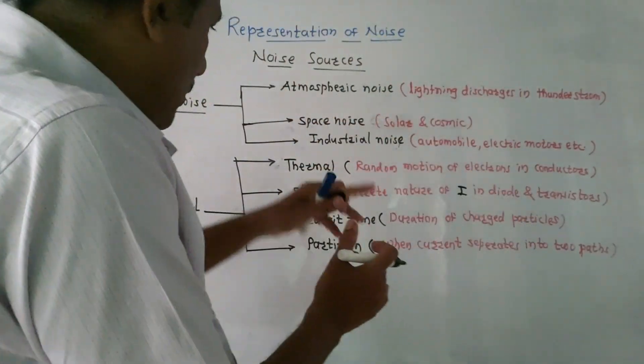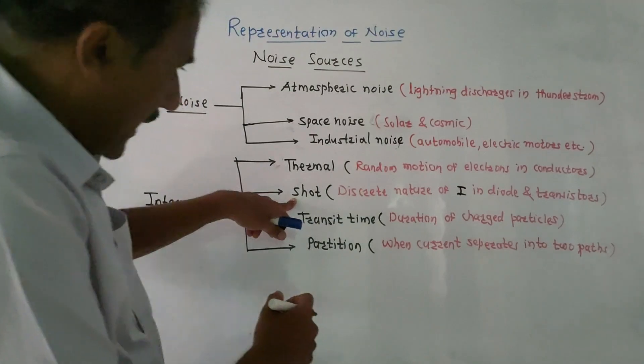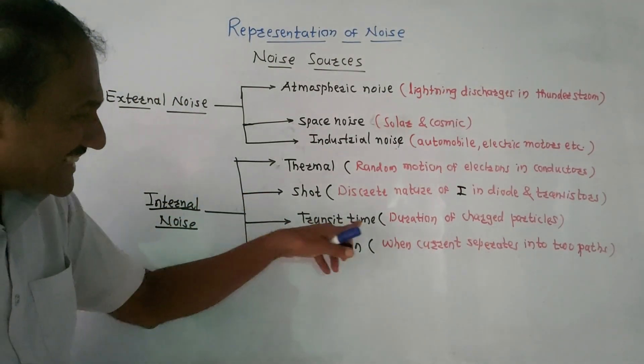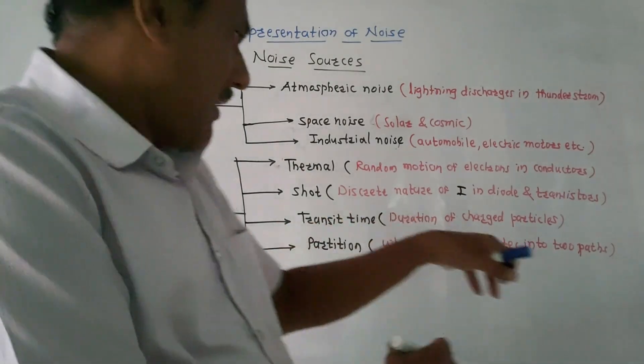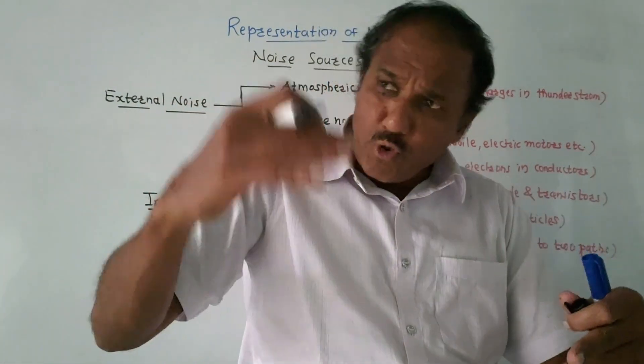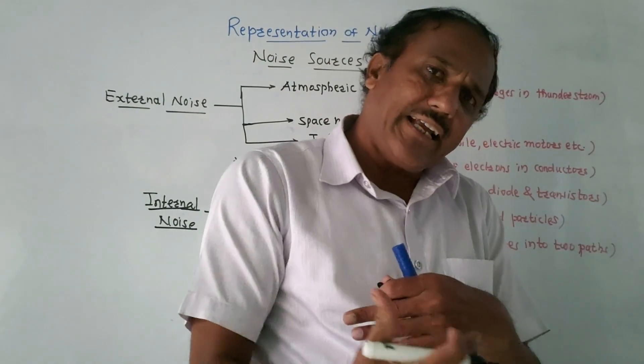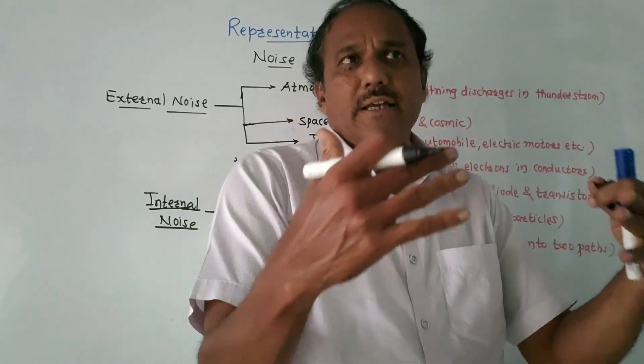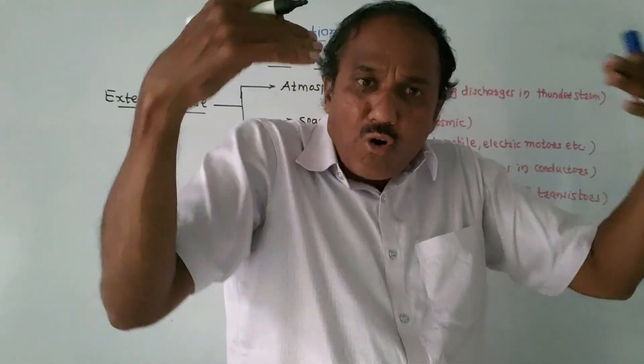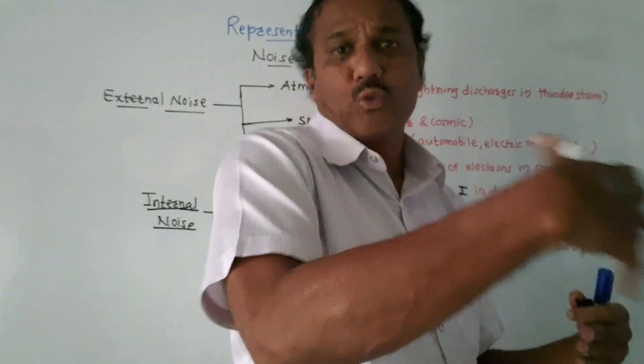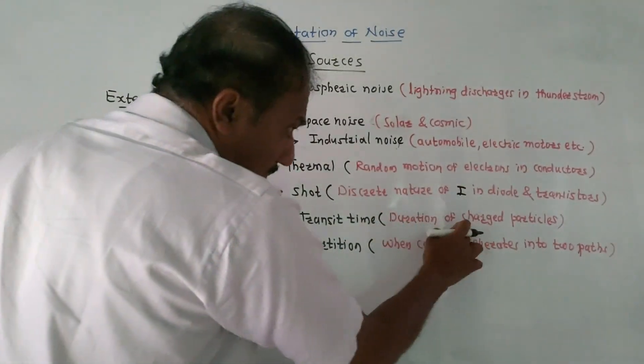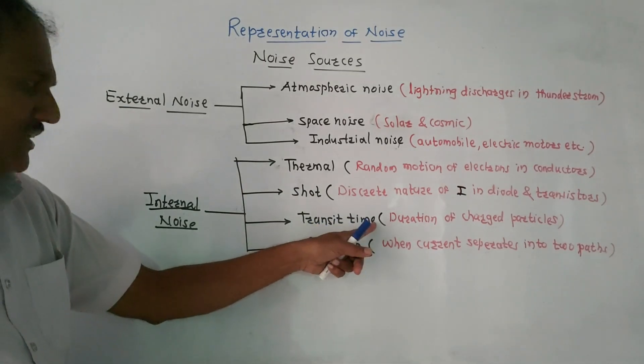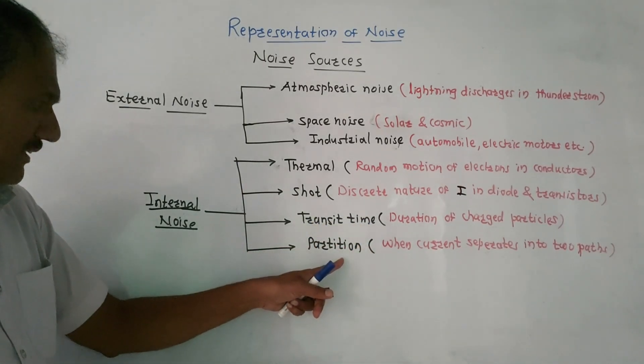Due to discrete nature, the type of noise which is shot noise is generated. Next is transit time noise. In case of transistor, if you're talking about transistor, then electron and hole takes their own time to reach from input to the output side. So duration of the charge particles causes the noise which is called transit time noise.